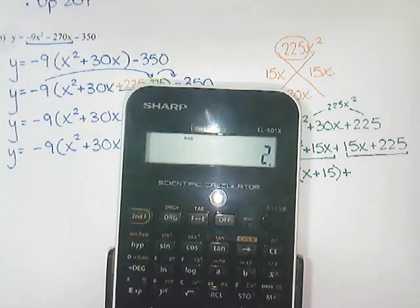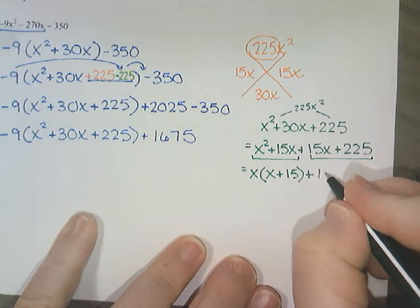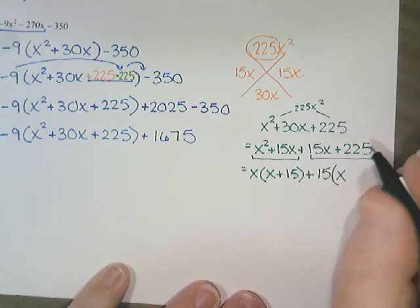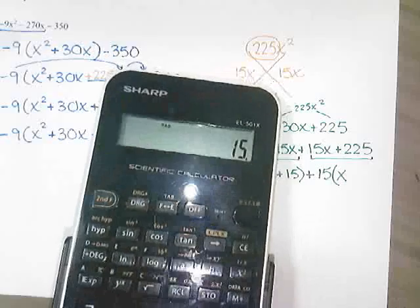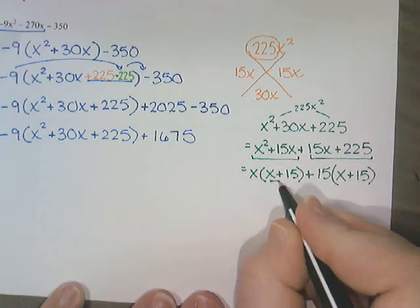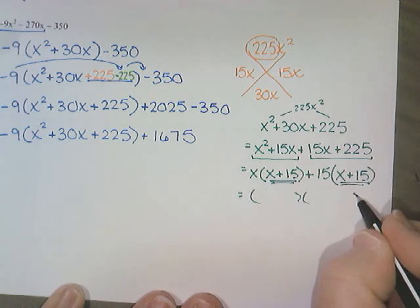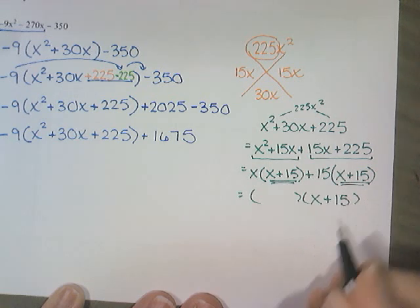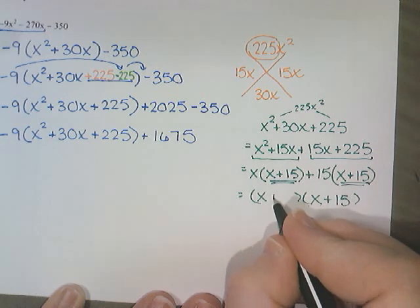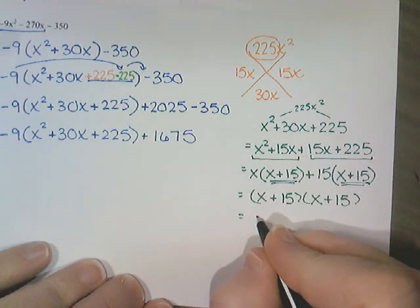It goes in 15 times. So they do both divide by 15. 15x divided by 15 is x. 225 divided by 15 is 15. So I notice that these two brackets are the same, which tells me that the second bracket here should be x plus 15. And the first bracket is x plus 15. So I have x plus 15 times x plus 15, which is x plus 15 squared.